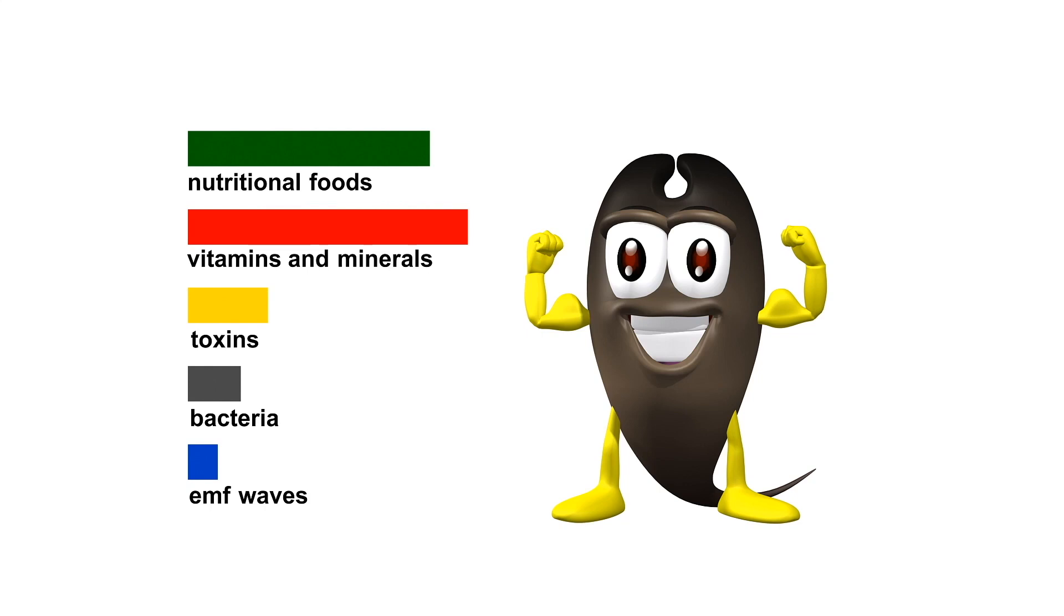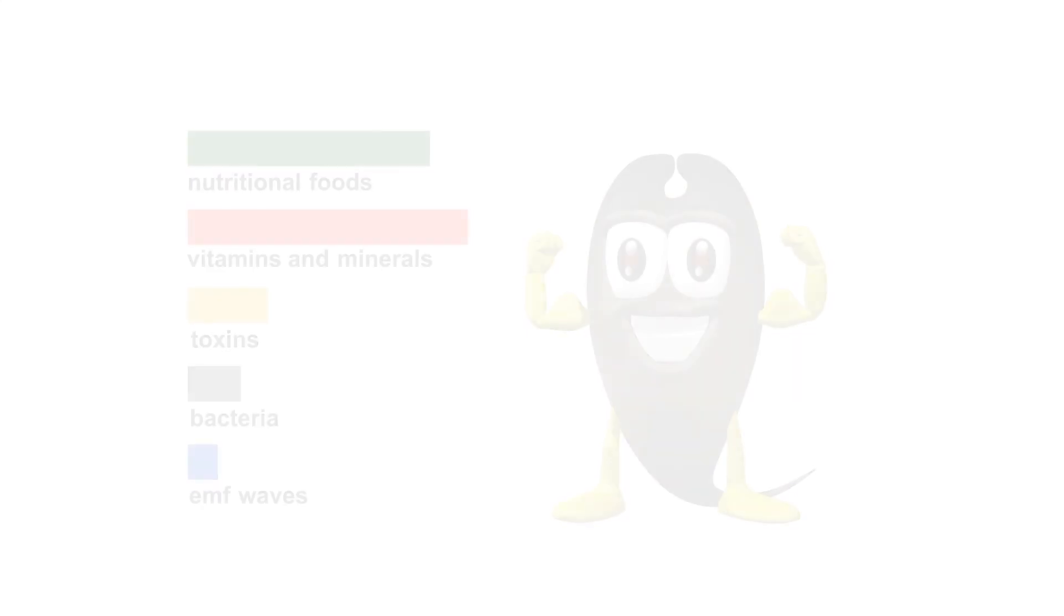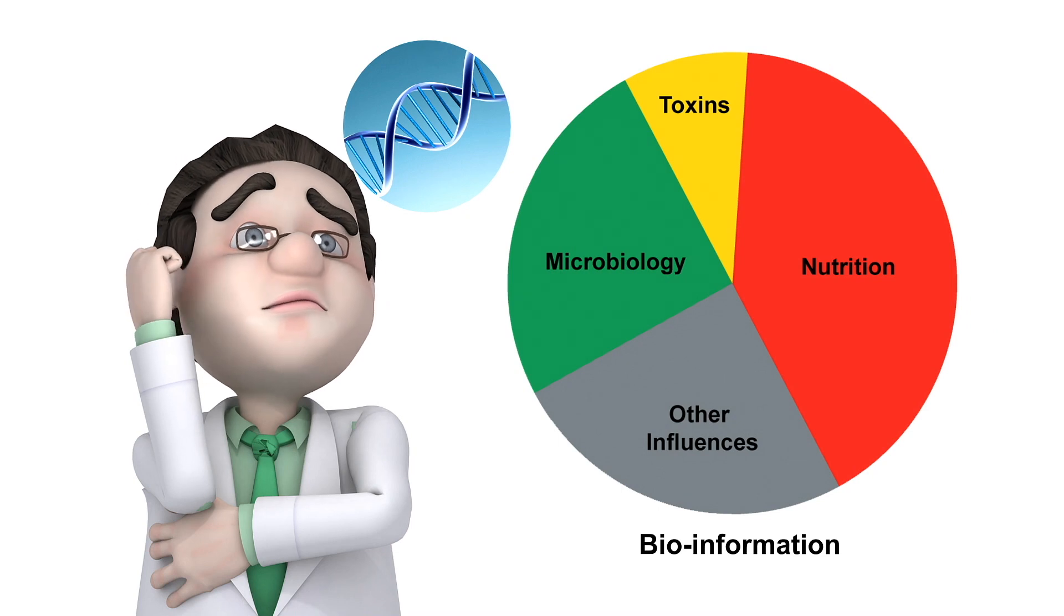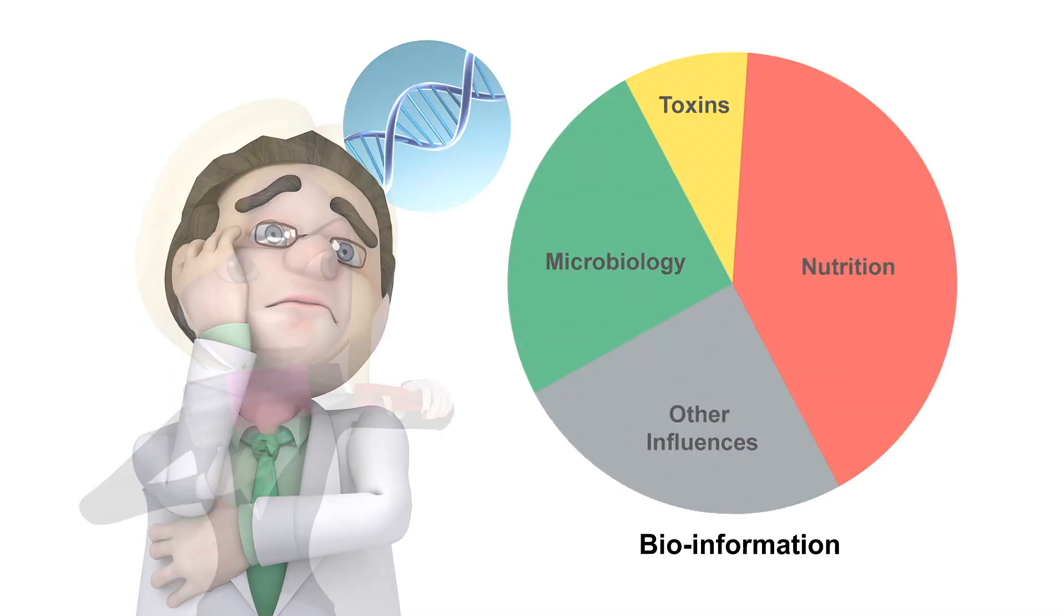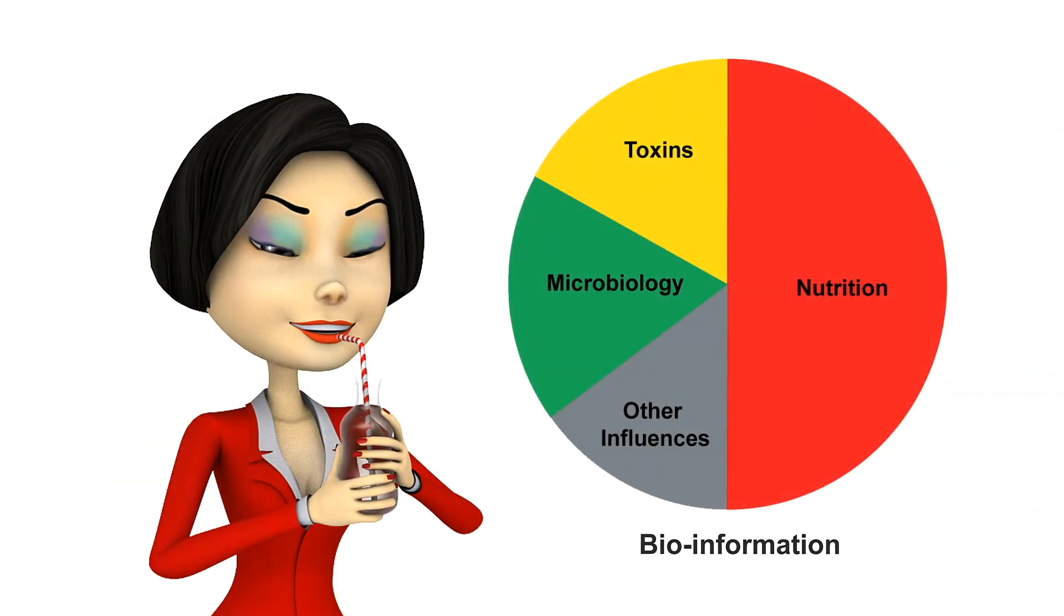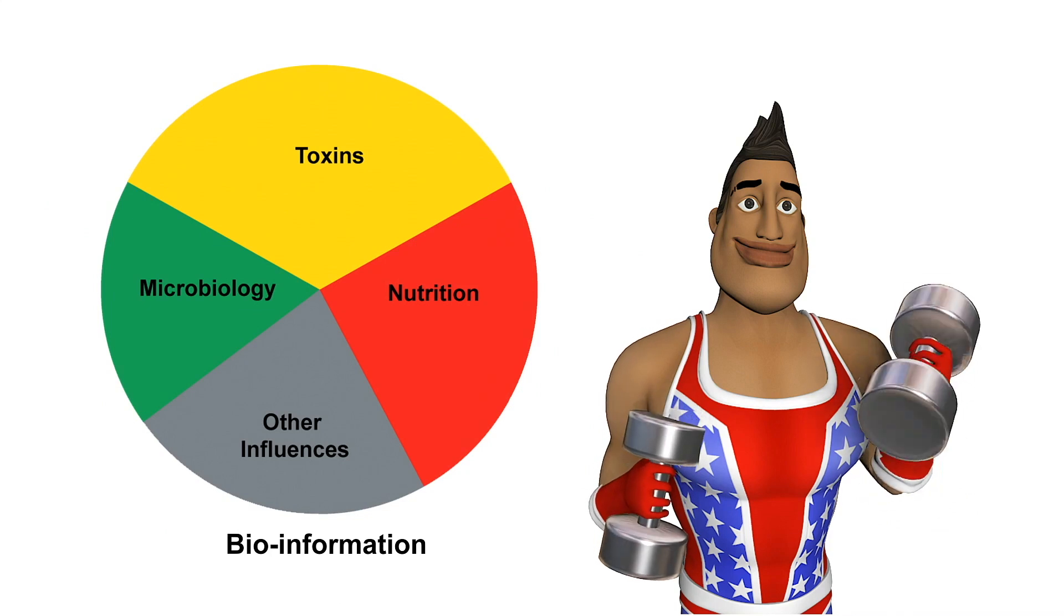Like a thumbprint, every person is genetically different, and therefore our own homeodynamic environment is unique. This can be reflected in the bio information gathered from a single hair strand.